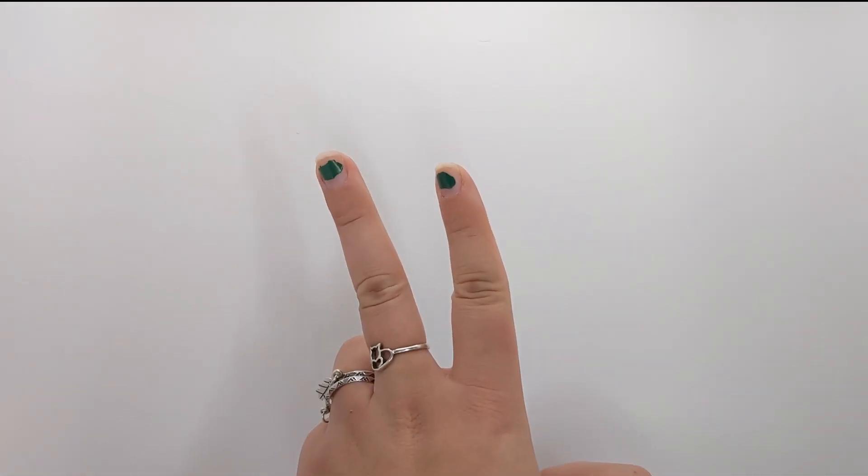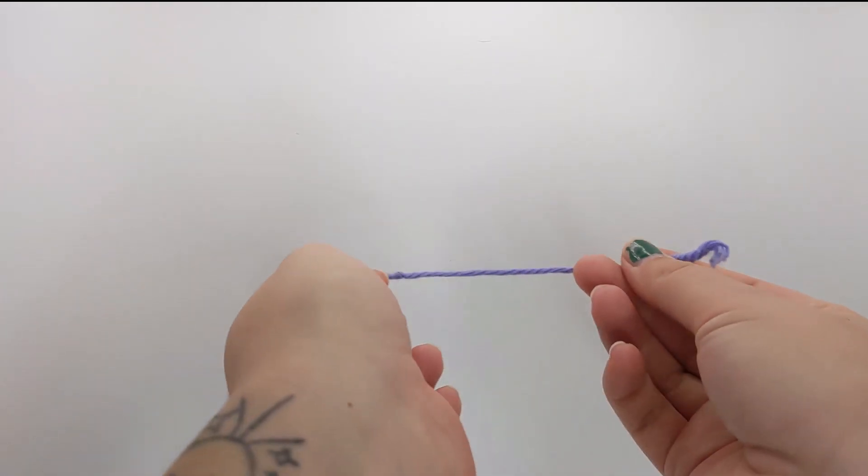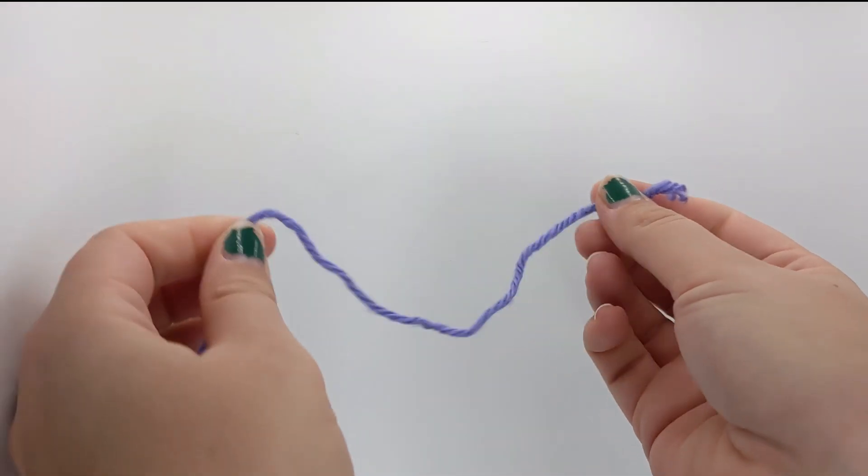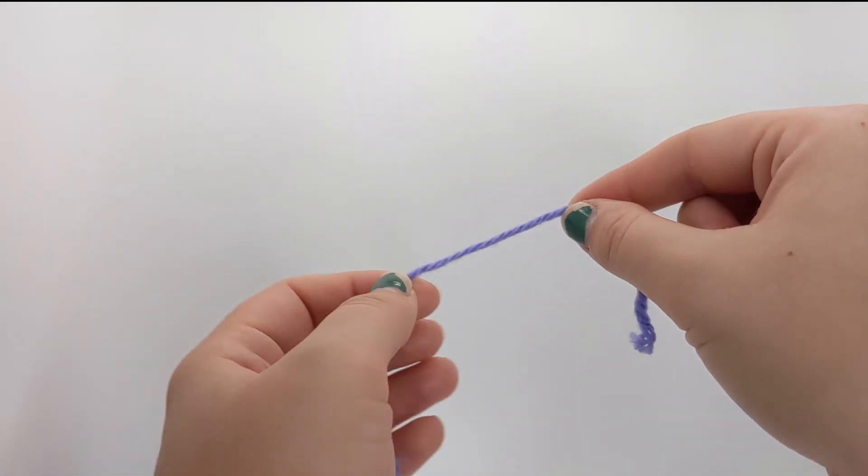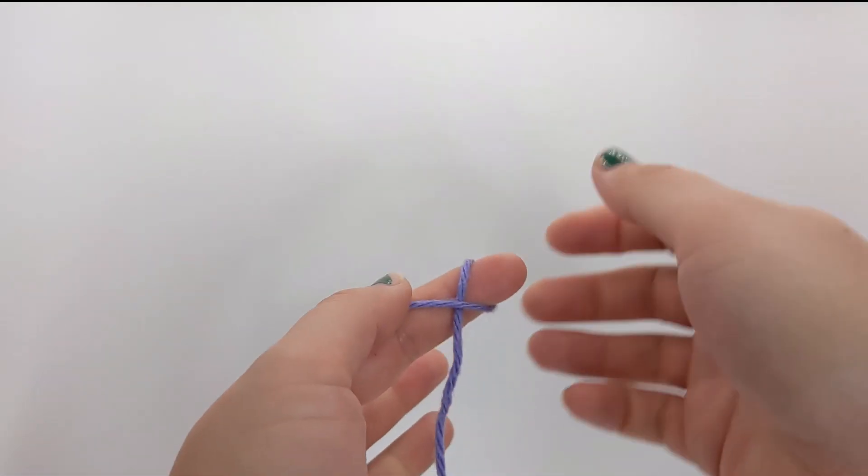Okay, so there are two main foundations you need to learn for crocheting. You can work in rows or you can work in the round. Working in the round can be a little tricky so we will start off practicing with a row and this starts with a simple slipknot.